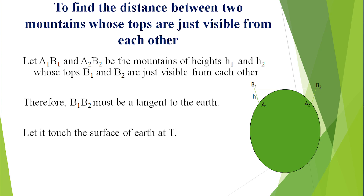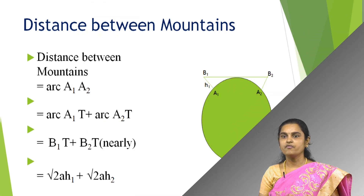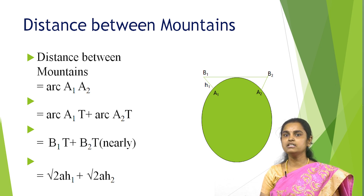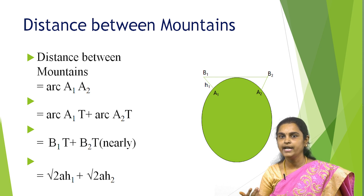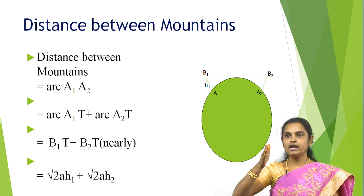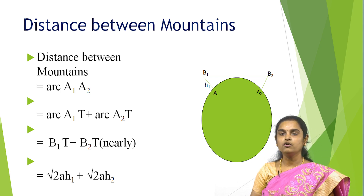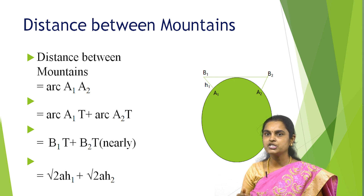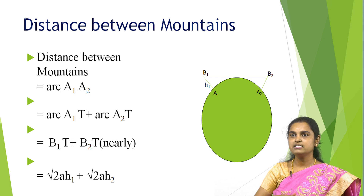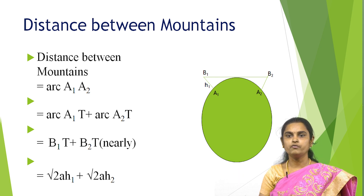Using the dip of horizon, we can find the distance between two mountains whose tops are just visible from each other. Let A₁B₁ and A₂B₂ be mountains of height H₁ and H₂ whose tops B₁ and B₂ are just visible from each other — the line B₁B₂ must be tangent to the earth, touching it at T. The distance between the mountains is arc A₁A₂, which equals arc A₁T plus arc A₂T, approximately equal to B₁T plus B₂T. From the dip of horizon formula, this gives √(2AH₁) + √(2AH₂).